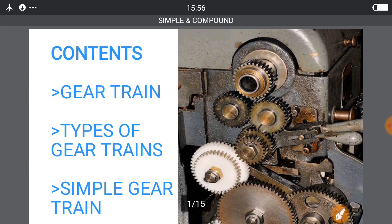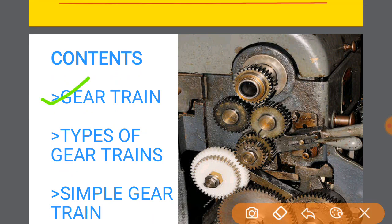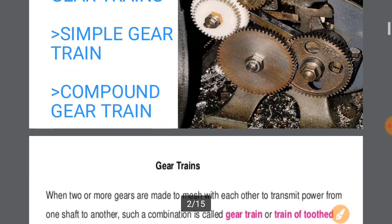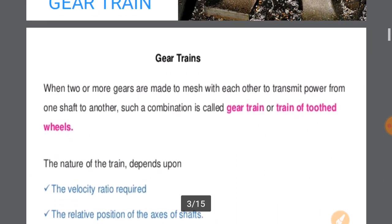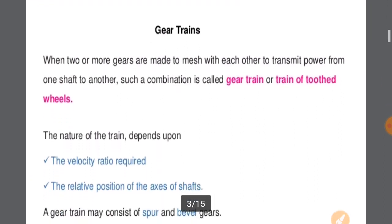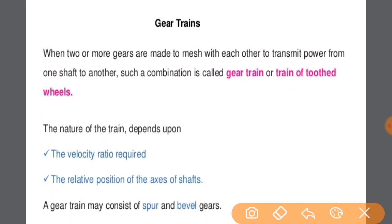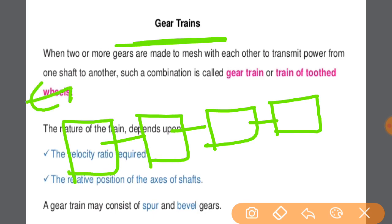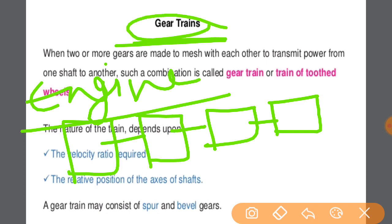Here we will discuss Gear Train — what the Gear Train means, types of Gear Train. We will discuss two types: Simple Gear Train and Compound Gear Train. This slide will cover all these things in this video. Let me first tell you what is the Gear Train. As you all know, a train is a combination of many bogies driven by an engine.